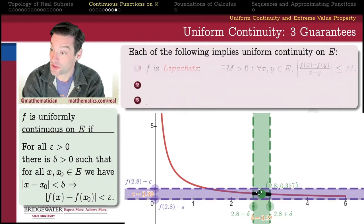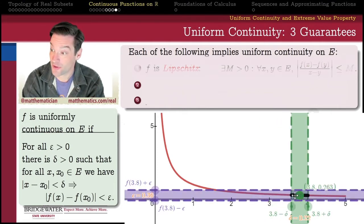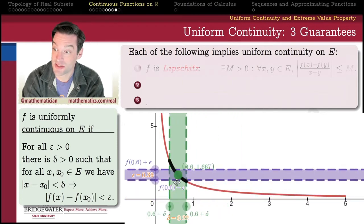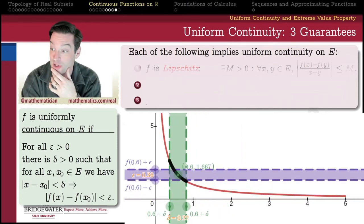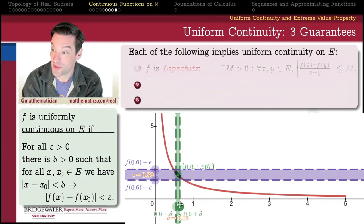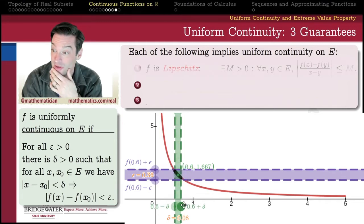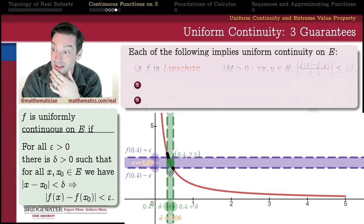If I pick this delta, for example, it works really well out here where the graph is shallow, but once the graph starts to get steeper and we get closer to that vertical asymptote, this same delta no longer works. So I decide, well, maybe I should have picked a smaller delta, but then even if I had picked a smaller delta, if I get a little closer to that vertical asymptote, that smaller delta doesn't work anymore either.